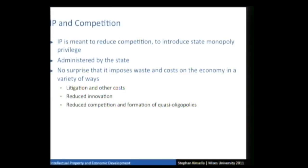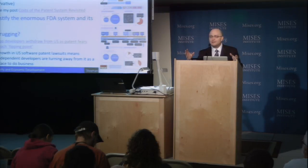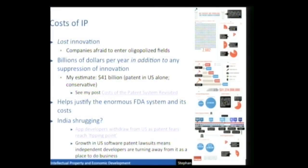This system is administered by the state, so it's no surprise that it imposes waste and cost on the economy, and also because it grants a monopoly privilege that stifles competition. We can expect to see lots of costs: litigation costs, reduced innovation — if you protect someone from competition, they don't have to innovate as much — and reduced competition and the formation of oligopolies. One cost is lost innovation. If a group of companies dominates a field with early patents, outside companies are afraid or actually prohibited from entering that field and won't invest in innovating there.